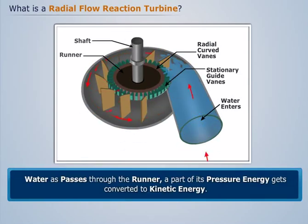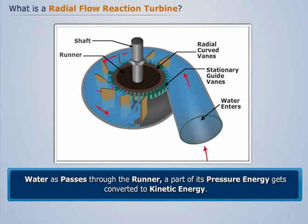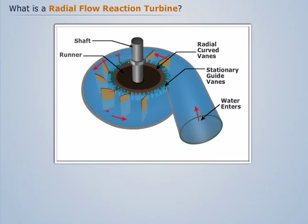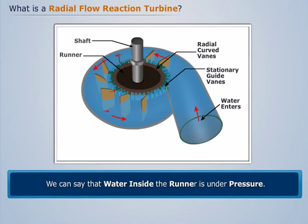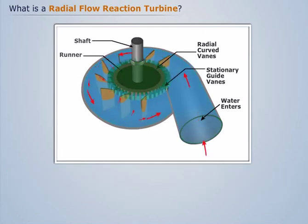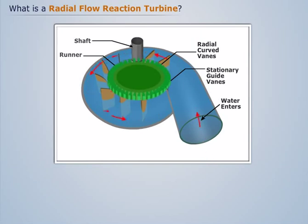As water passes through the runner, a part of its pressure energy gets converted to kinetic energy. Thus, water inside the runner is under pressure, and due to this, the runner rotates at a high speed.